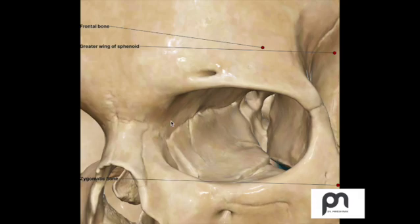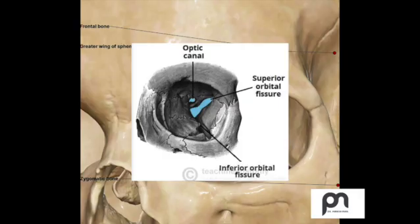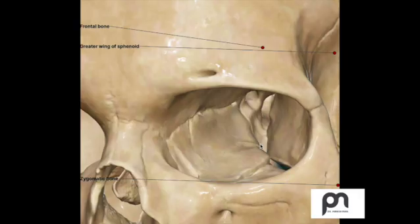Why is this important and why are we looking at this? Recently we have been understanding the new concept of transorbital surgery. If there is a lesion, especially in the ITF or any area which is easily accessible via the orbit, along with ophthalmology and neurosurgeons, a team effort can be made to have access to this lesion.